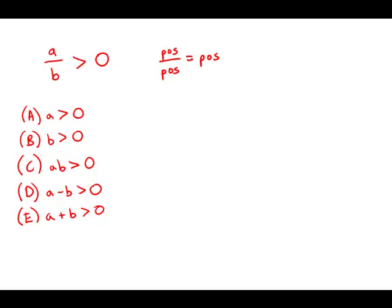But remember also that if we divide a negative by a negative, that is also positive. So it's possible that a and b are both positive, but it's also possible that a and b are both negative.